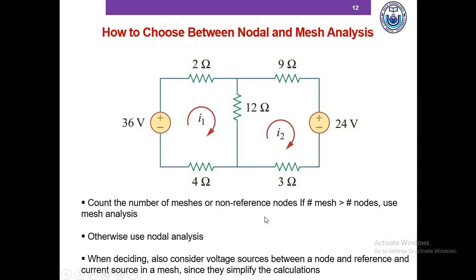When deciding, also consider voltage sources between a node and the reference, and current sources in a mesh, since they simplify calculations. If you cleverly choose the ground such that a voltage source connects directly to the reference node, you already know that node's voltage — for instance 36 volts — which reduces an unknown. Choosing the ground wisely reduces the number of unknowns in nodal analysis.